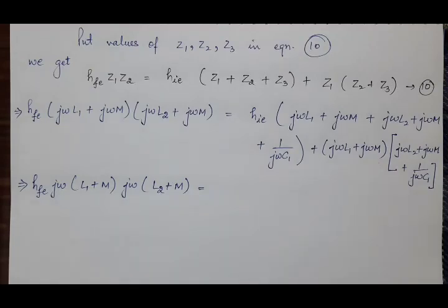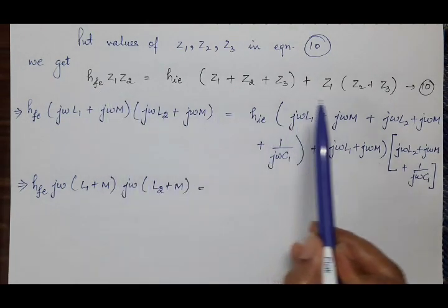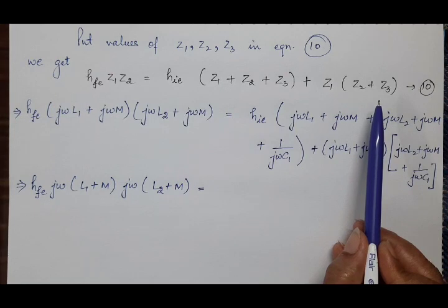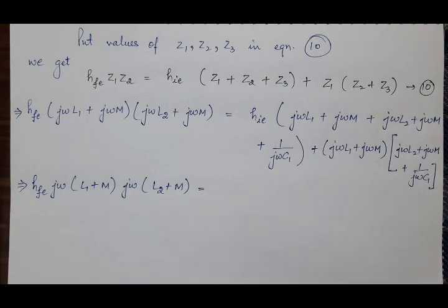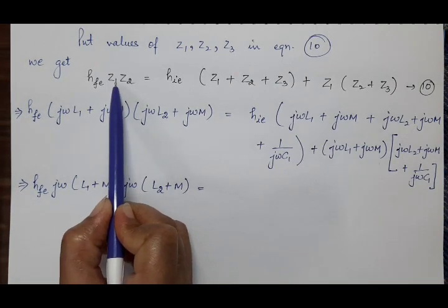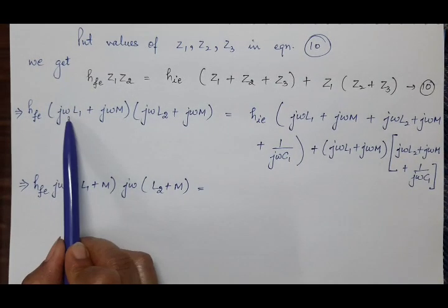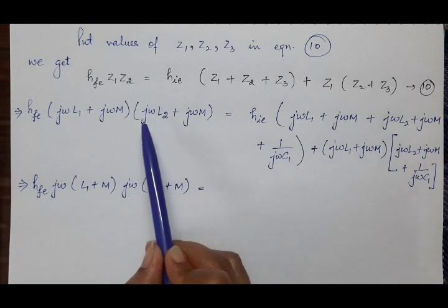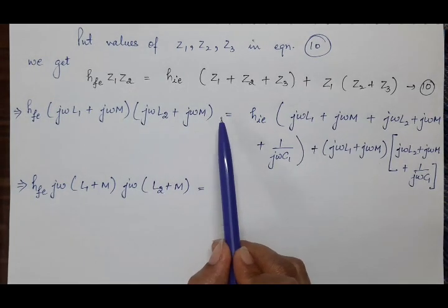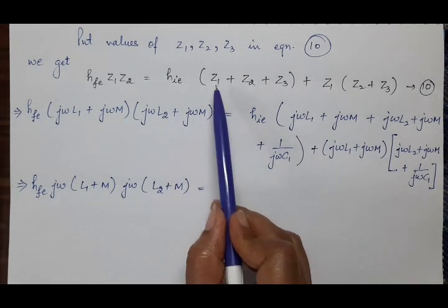Good morning students. In the previous lecture we derived an expression for the Hartley oscillator equivalent circuit and named it equation number 10. Now we will put the values of Z1, Z2, Z3 into expression 10. Z1 was the impedance of L1, which is jωL1 + jωM. Z2 is jωL2 + jωM, equal to hie.